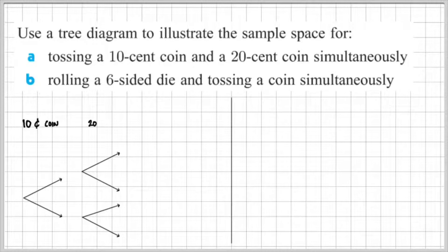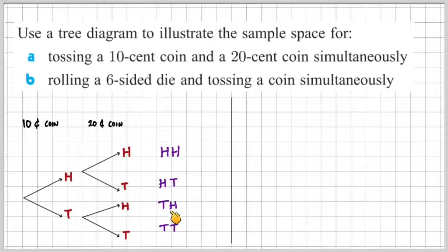For part A, I have the first branch which represents the 10 cent coin and the second branch which represents the 20 cent coin. For each coin we have a heads and a tails so we can have the outcome heads and heads, heads and tails, tails and heads and tails and tails. So there are four possible outcomes for this experiment.